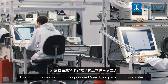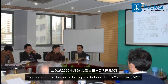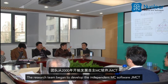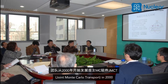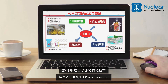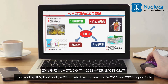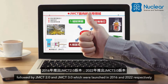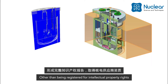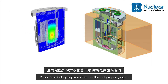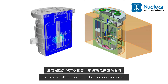Therefore, the development of independent Monte Carlo particle transport software is of great significance. The research team began developing the independent MC software JMCT (Joint Monte Carlo Transport) in 2000. In 2013, JMCT 1.0 was launched, followed by JMCT 2.0 and JMCT 3.0, launched in 2016 and 2022 respectively. JMCT has passed hundreds of international benchmark tests, experiments, and third-party independent verification, and is a qualified tool for nuclear power development.